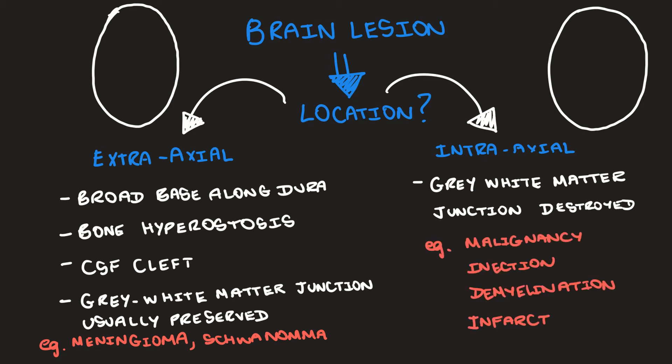Examples of intra-axial lesions include malignancy, which can be primary or secondary, infections such as abscesses, demyelinations such as tumefactive MS, and even infarcts. We will do another video discussing the difference between cytotoxic and vasogenic oedema.